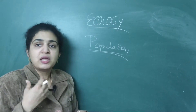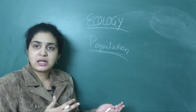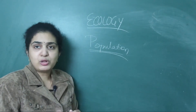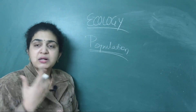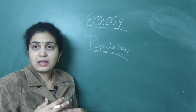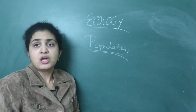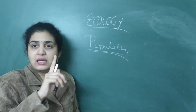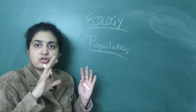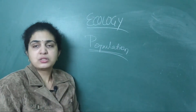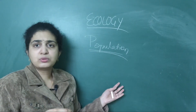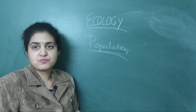When we deal with individuals, we calculate births and deaths. When we come to populations, we calculate birth rates and death rates. The rates are calculated per year at the population level. When you look at a single individual, they contribute to births and deaths; when you look at the whole population, it is birth rate and death rate.